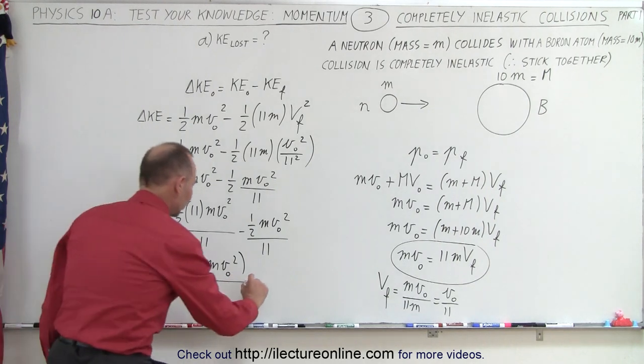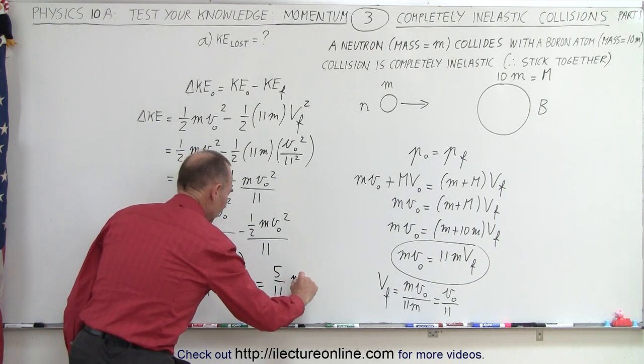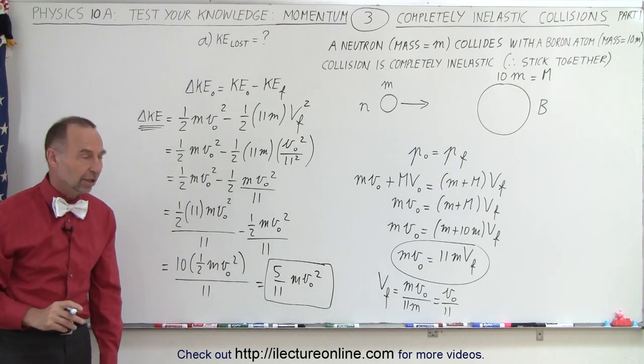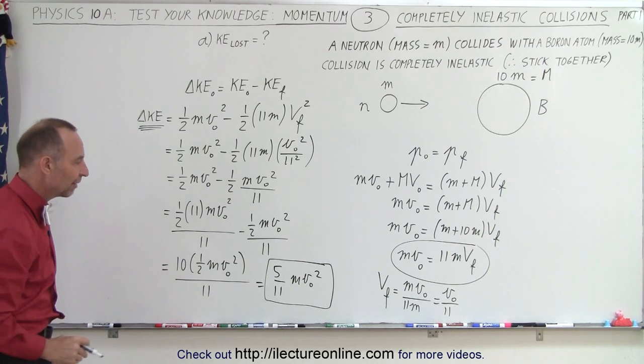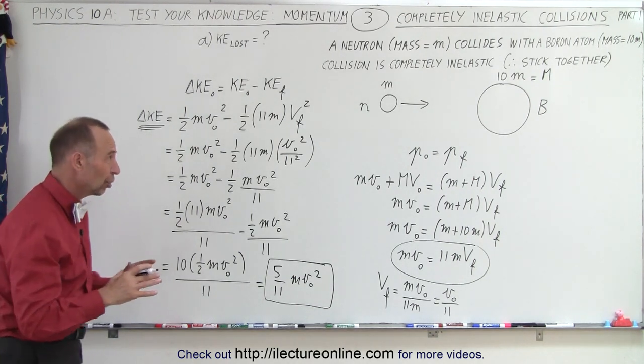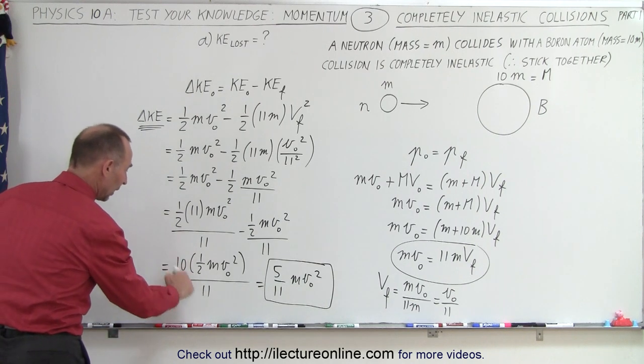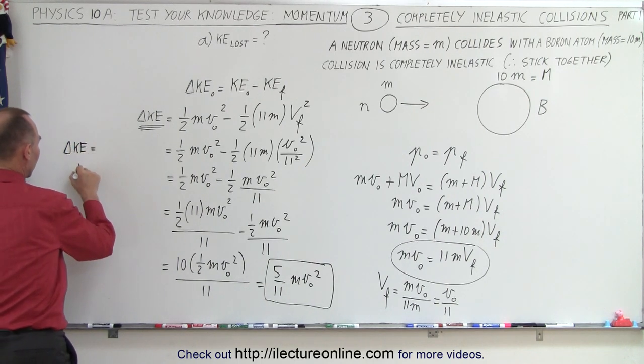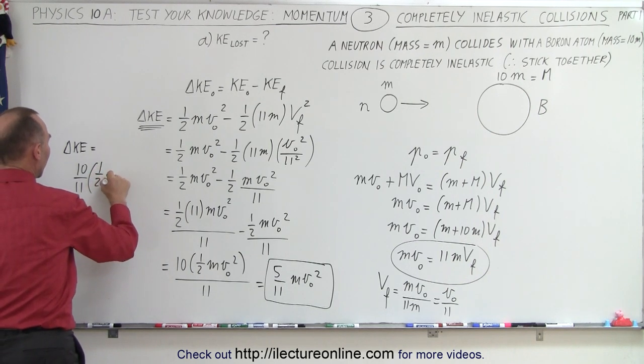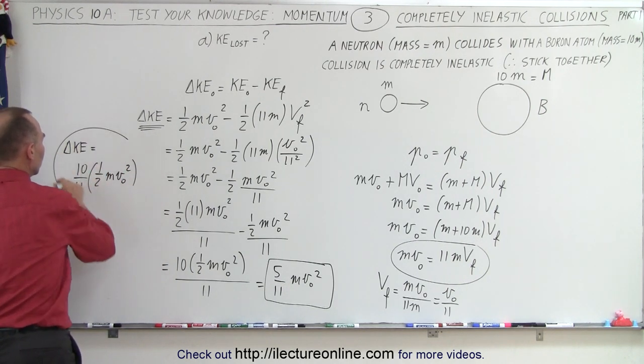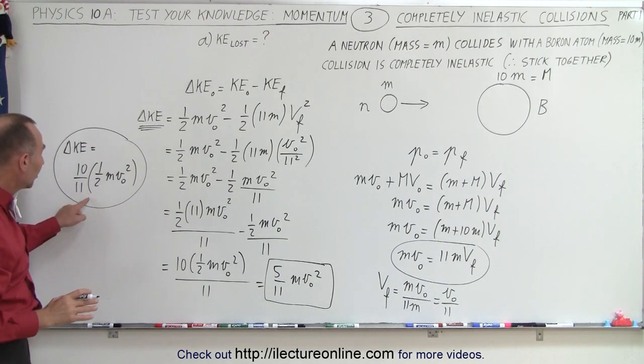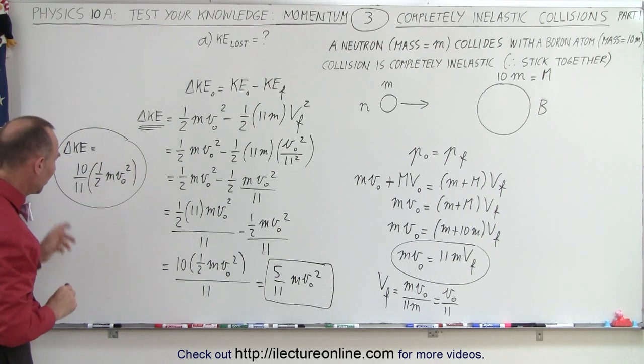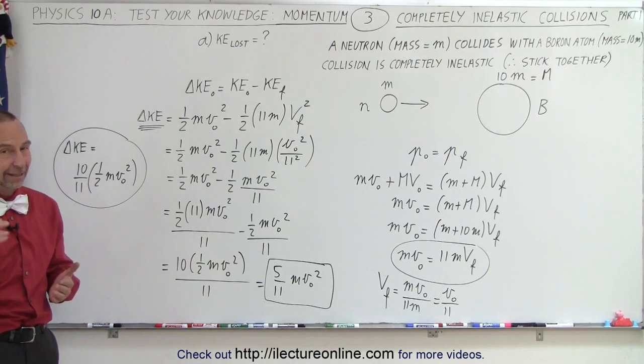10 divided by 2 is 5. So this can be written as 5 over 11 mv initial squared. And this is going to equal the loss in kinetic energy. So how much energy is lost in the collision? 5 11ths mv initial squared. If you want to write that in terms of how much initial energy you had in the first place, well then you could write it like this. So you could say that delta kinetic energy can also be written as 10 11ths of 1 half mv initial squared. And notice that means that almost 90 percent of the initial energy is lost. This is the initial kinetic energy and this is how much of it we lost. 10 11ths or simplified can be written as 5 11ths mv initial squared. And that is how it's done.